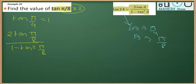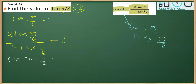That expression equals 1. For further simplification, we let y = tan(π/8). Then the equation transforms to 2y / (1 − y²) = 1.